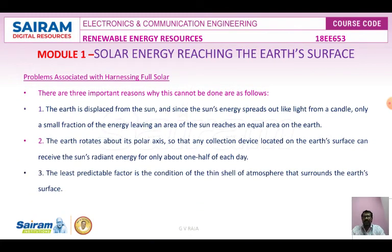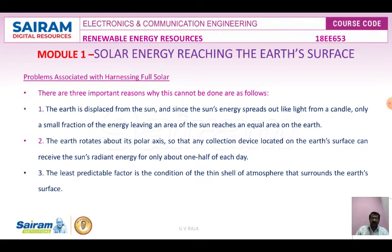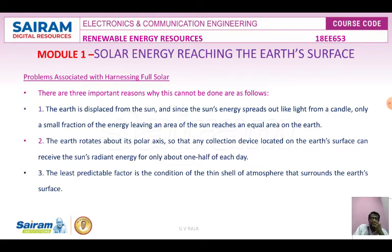What are the problems associated with harnessing the full solar energy? There are three important reasons why we cannot obtain full solar energy. First, the Earth is displaced from the Sun — the Sun's energy spreads out like light from a candle, and only a small fraction of energy leaving the Sun reaches an equal area on the Earth.